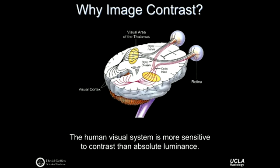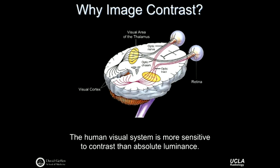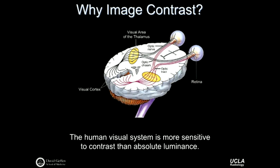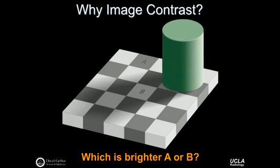Our goal today is to talk about image contrast. We need a definition and need to think about why image contrast matters. It turns out the human visual system is very sensitive to contrast — we're very good at detecting differences between objects. We're not very good at detecting absolute luminance; as ambient light adjusts, we struggle to assign brightness values. We're not good at counting photons, but we are good at detecting contrast between objects.